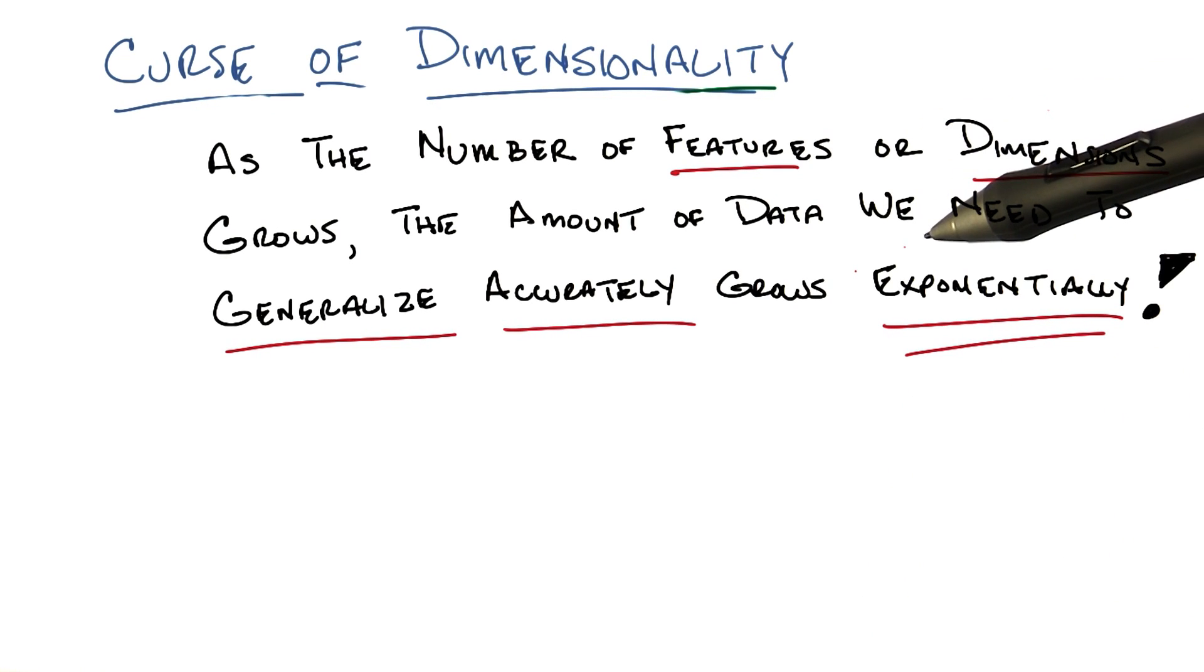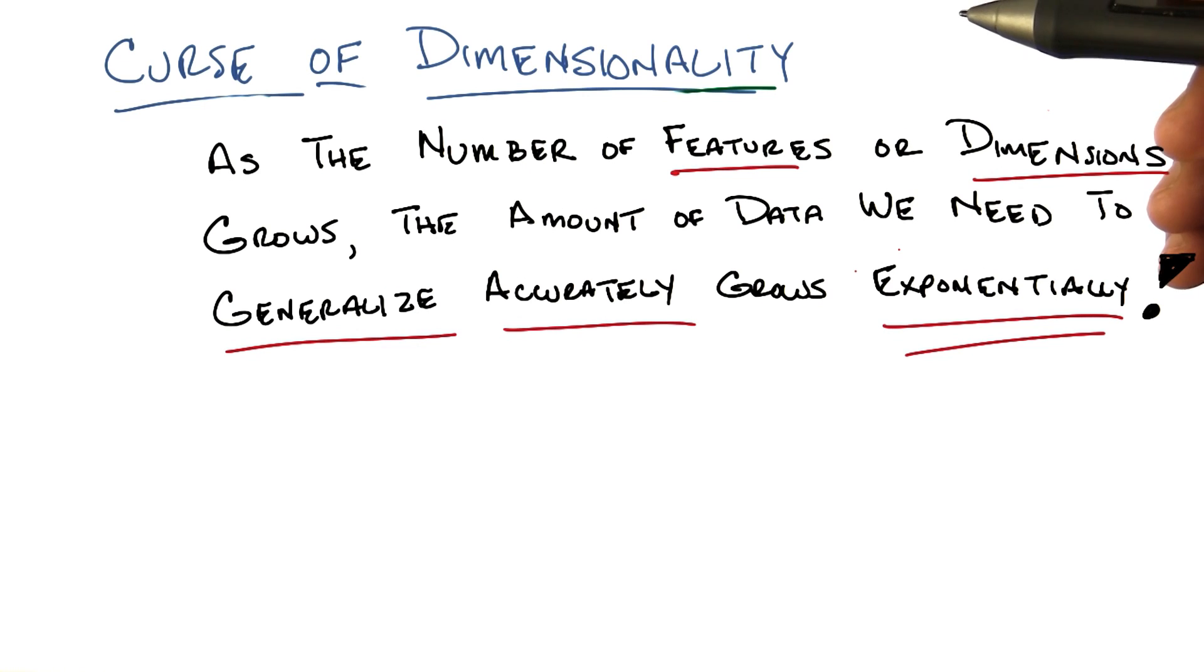Now this is a problem, of course, because exponentially means bad in computer science land, because when things are exponential, they're effectively untenable. You just can't win.